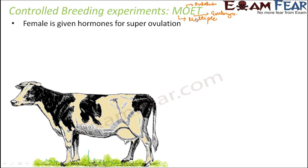In the case of this technique, some hormones are injected into the female's body because the process of ovulation is controlled by female hormones. If that hormone is injected into the body of the female in an extra amount, instead of one egg being released, multiple eggs are released. The female is given hormones for super ovulation, which means that if normally it would give one egg, now it gives almost six to eight eggs.